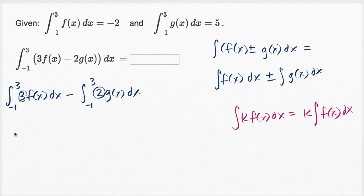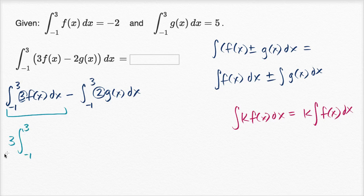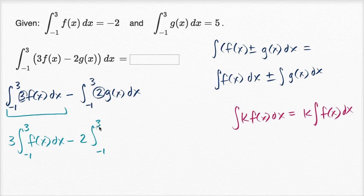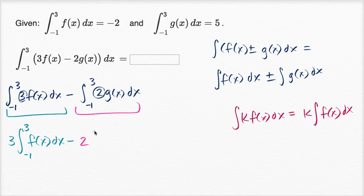So I can rewrite this first integral as three times the definite integral from negative one to three of f of x dx, minus two times the definite integral from negative one to three of g of x dx.